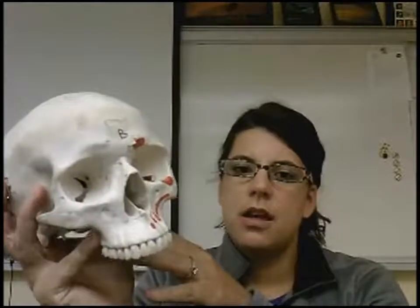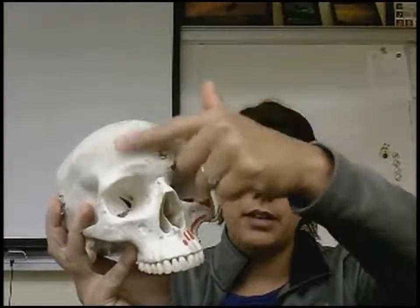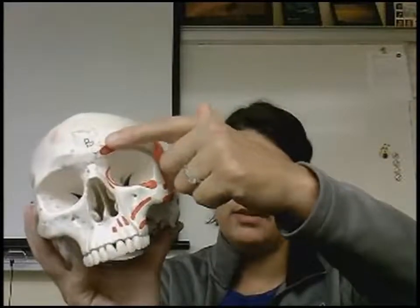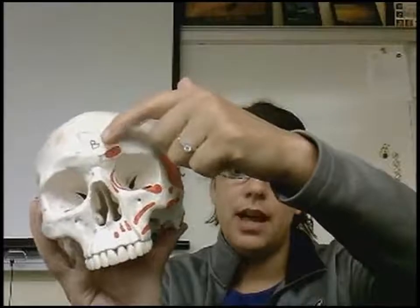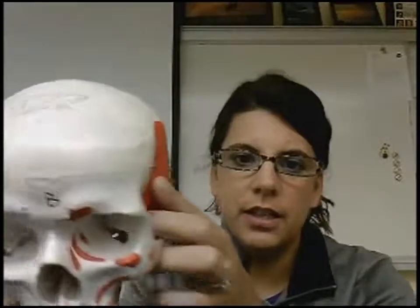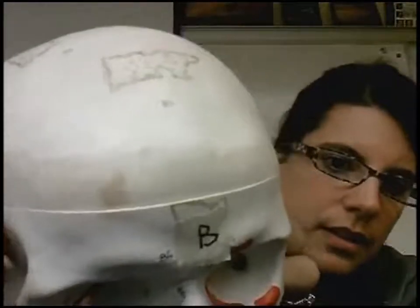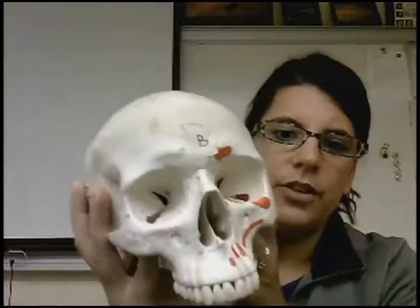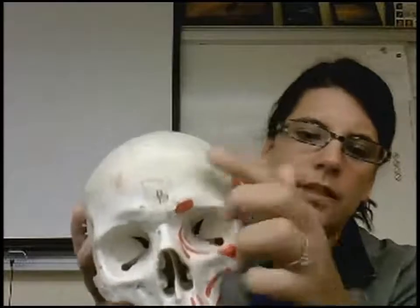If you look at the skull here, the frontal bone is going to be right here, this bone right here. This area is going to be where the glabella is, right between the eyes. And then you can see this suture line right here, which is going to be the coronal suture — this immovable joint. So the frontal bone is the bone that's going to be right here.